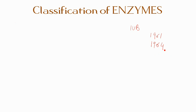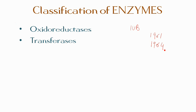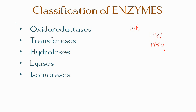The six enzyme categories are oxidoreductases, transferases, hydrolases, lyases, isomerases, and ligases. Now let's talk about this classification in detail.